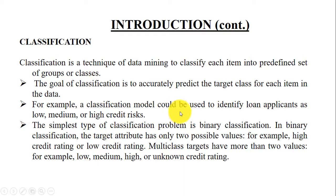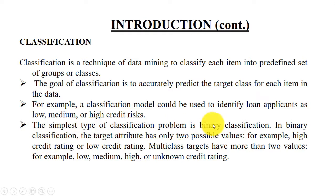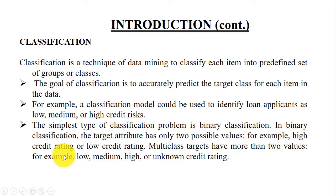For example, a classification model could be used to identify loan applicants as low, medium, or high credit risk — here we have three class labels. The simplest type of classification problem is binary classification, where we have only two possible values, such as high credit rating or low credit rating. In multi-class targets, we have more than two values, like low, medium, or high credit. Similarly, in our sentiment analysis case, we have three classes: positive, negative, and neutral.